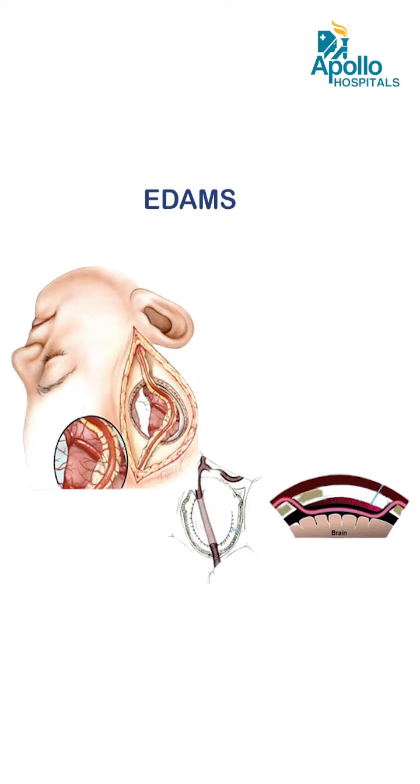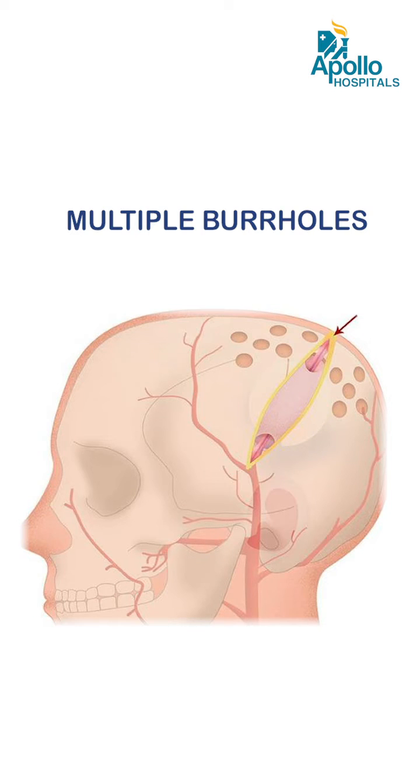The second procedure is called encephaloduroarteriosynangiosis, in which the muscle and its blood supply is layered over the brain so that the hungry brain, which is not receiving blood, can start receiving blood from that area. The third procedure is called multiple burr holes, in which small tiny holes are made on the skull of the child through which fresh, new blood supply to the brain can enter.